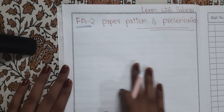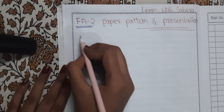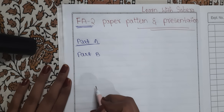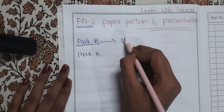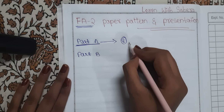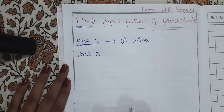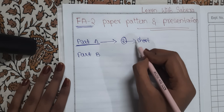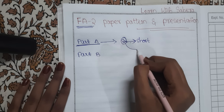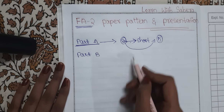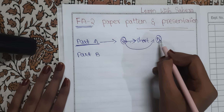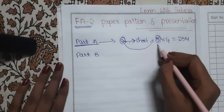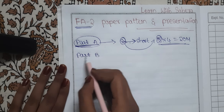Let us look at the paper pattern. Financial Accounting 2 will have two parts: Part A and Part B. Part A consists of eight questions — purely short questions. You do not need to write long answers. Out of the eight questions, you need to attempt any five. Each question carries four marks, so four into five is twenty marks. Part A carries twenty marks total.